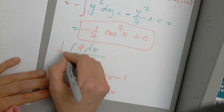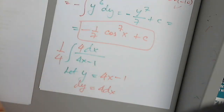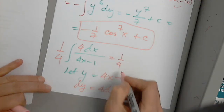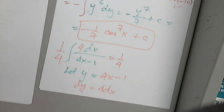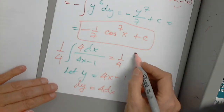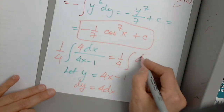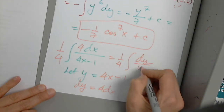We need a 4 and a 1/4. We cannot multiply the top by 4 without multiplying the denominator by 4. So now the new integral becomes the integral of dy over y.